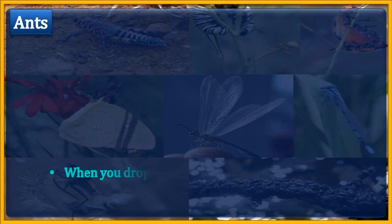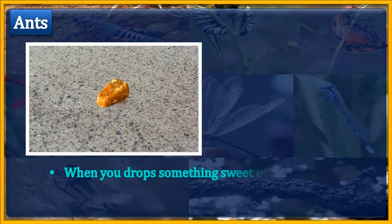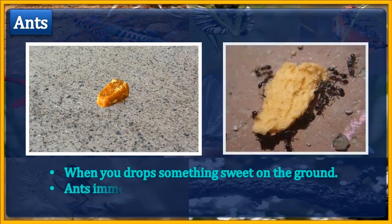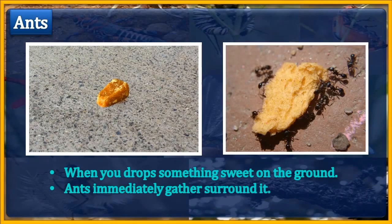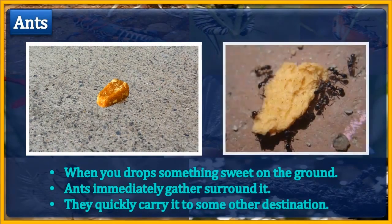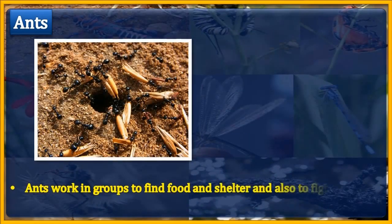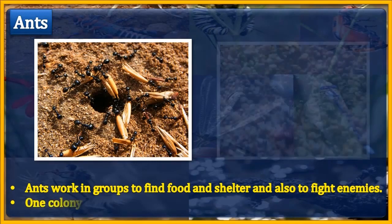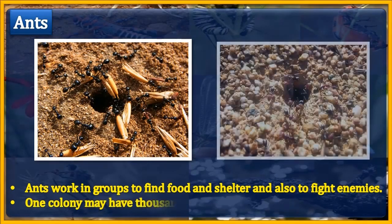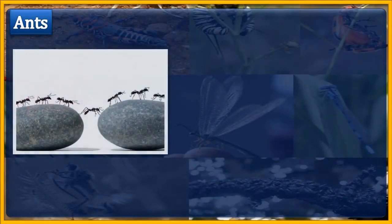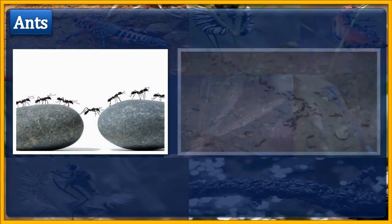Ants. When you drop something sweet on the ground, you will notice that ants immediately gather around it and quickly carry it to some other destination. Ants work in groups to find food and shelter, and also to fight enemies. One colony may have thousands of ants. You may have seen a number of ants moving in a line on the walls or floor of your house.